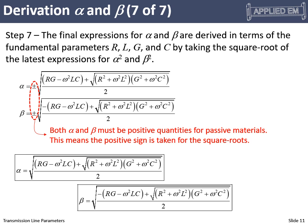We end up with our final expressions for alpha and beta in terms of the fundamental parameters R, L, G, and C. This is a strange mix of R, L, G, and C — which is exactly why those numbers alone aren't intuitive. But alpha consolidates all of the loss information, and beta consolidates all of the speed and oscillation information, even though that wasn't apparent from R, L, G, and C directly.